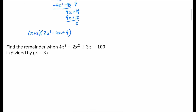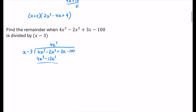This time we're going to get a remainder. We're dividing 4x³ minus 2x² plus 3x minus 100 by (x minus 3). First step: 4x³ divided by x is 4x². Multiply by (x minus 3) to get 4x³ minus 12x². Subtract carefully: minus 2 minus (minus 12) is minus 2 plus 12, which is 10. So we have 10x². Pull the 3x down.